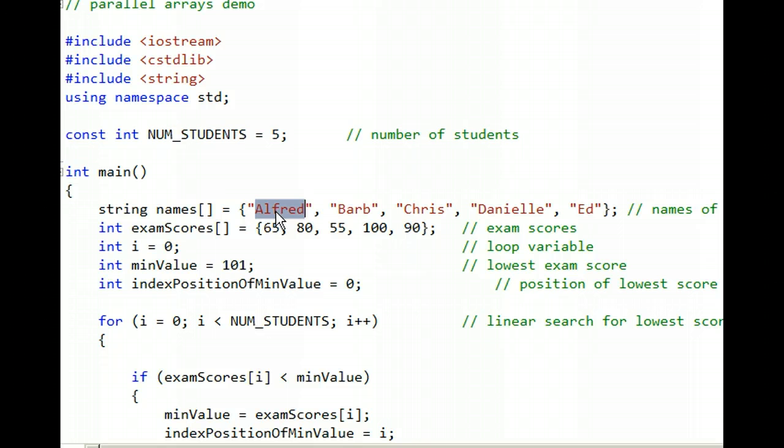In other words, Alfred earned a 65 on his exam. Barb earned an 80. Chris earned a 55.